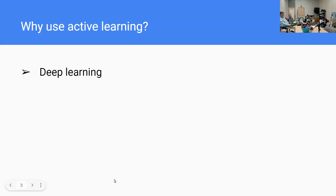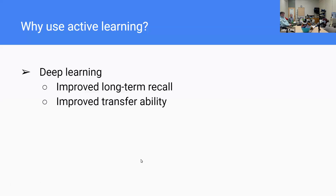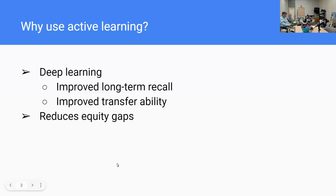Why use active learning? In general, it leads to deeper learning. What we generally mean by that is that people are able to remember things long term, and they're able to engage in more transfer — they can take concepts learned in one context and apply them in other contexts more effectively. There's a lot of research supporting this. You remember things better and can apply them more effectively when you engage in active learning than if you're just listening passively.